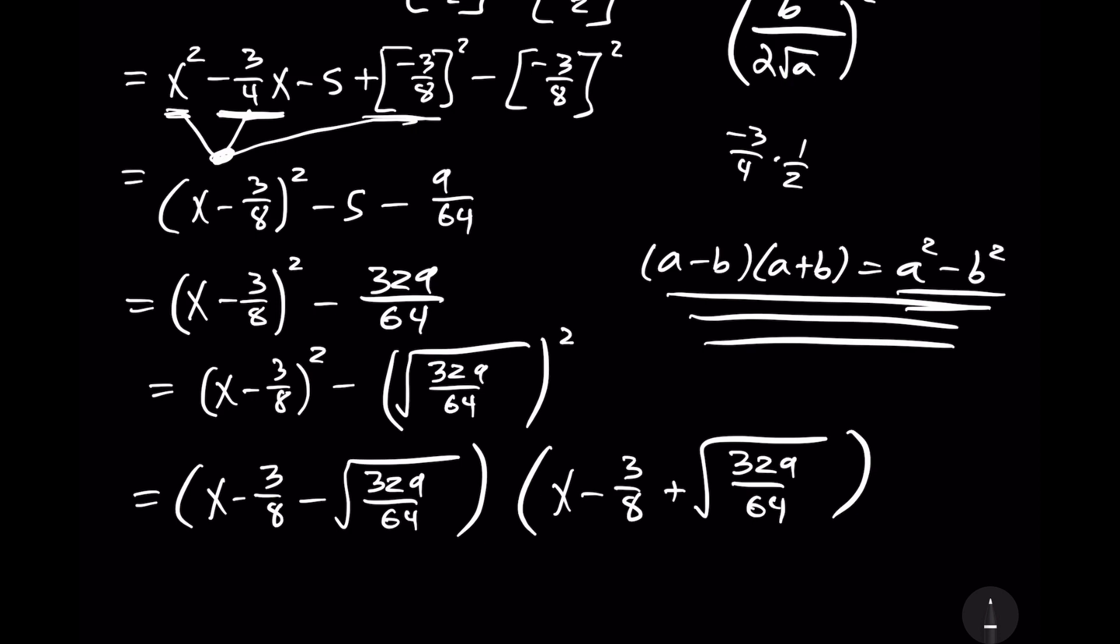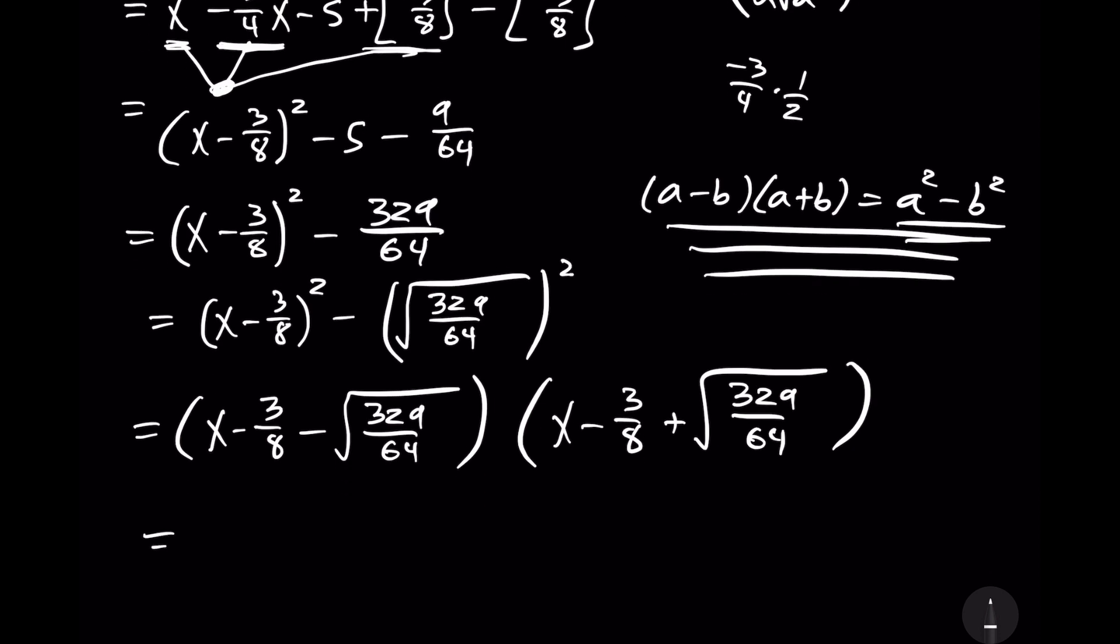And then we can further simplify this. So, we get the quantity x minus 3 over 8, minus the square root of 329 over 8. That's times the quantity x minus 3 over 8, plus the square root of 329 over 8.